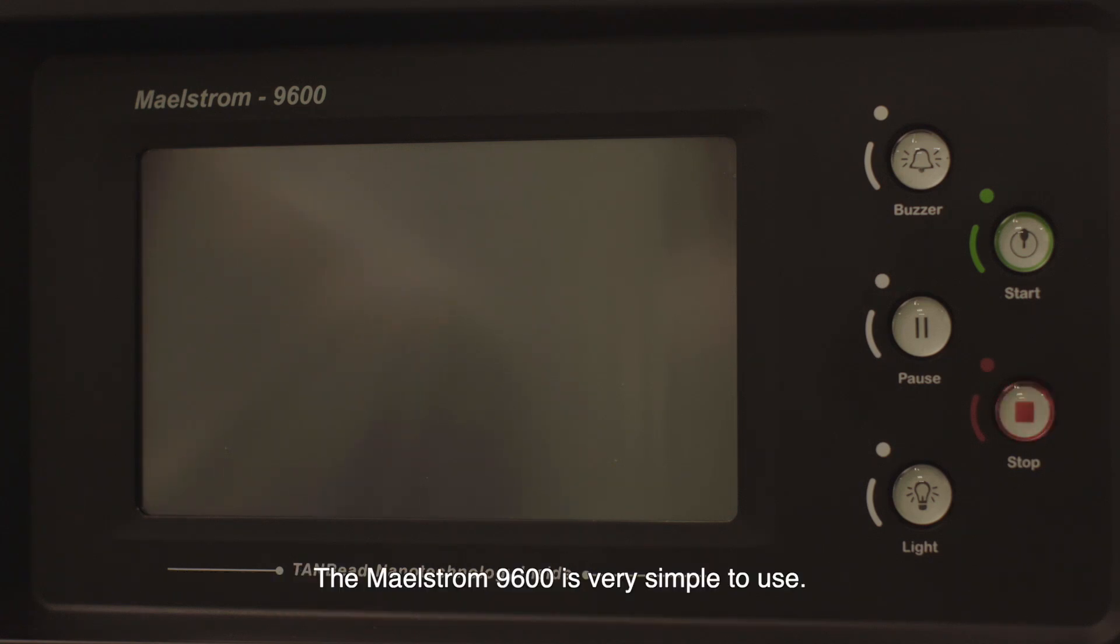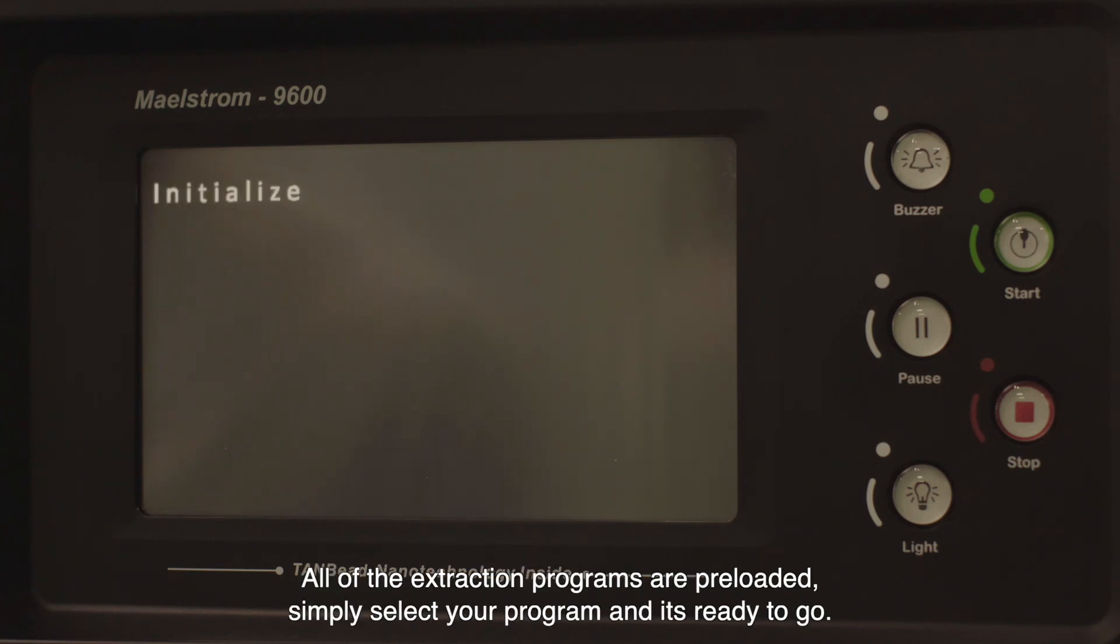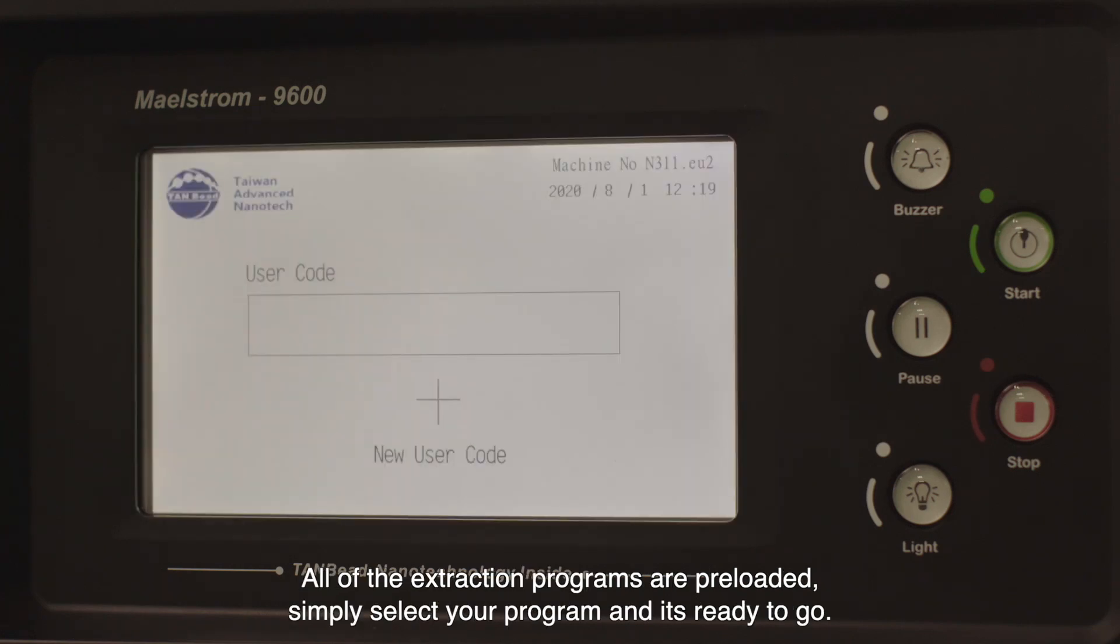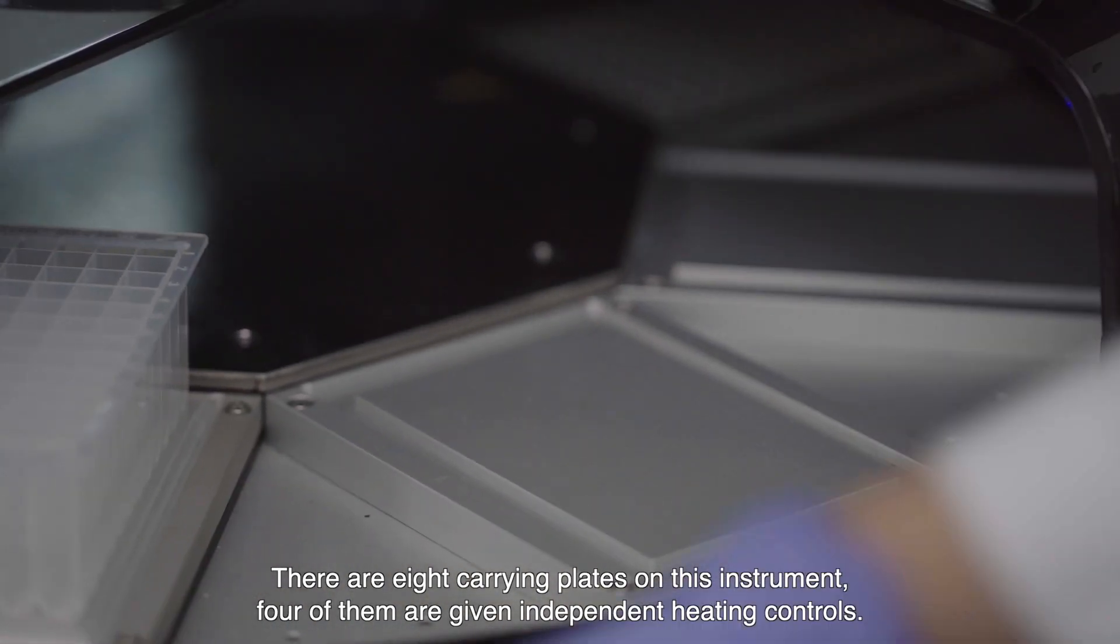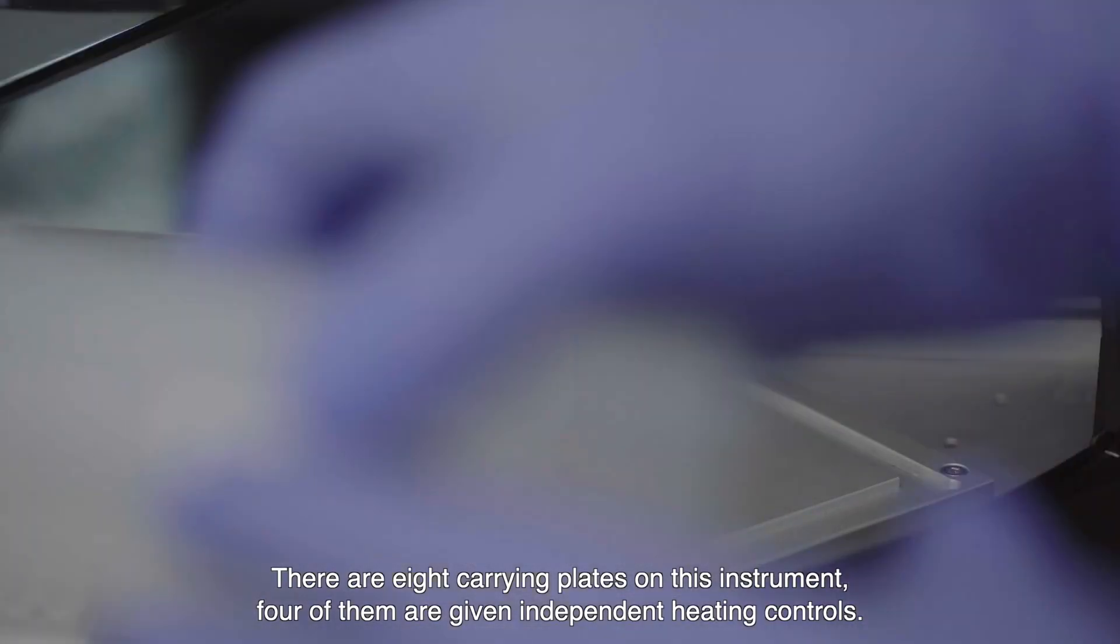The Maelstrom 9600 is very simple to use. All of the extraction programs are pre-loaded. Simply select your program and it is ready to go. There are eight carrying plates on this instrument. Four of them are given independent heating controls.